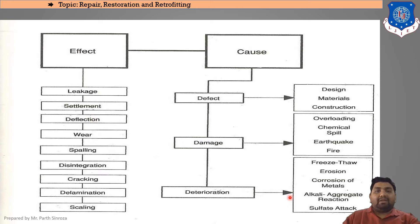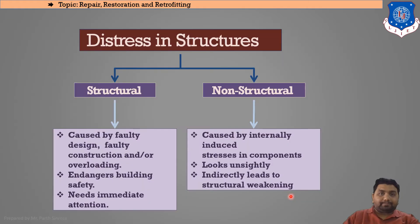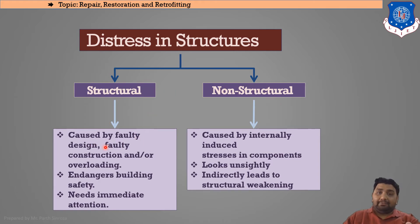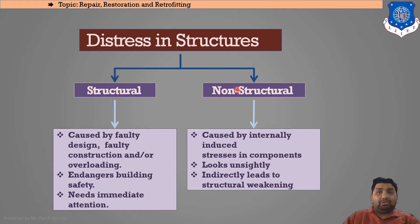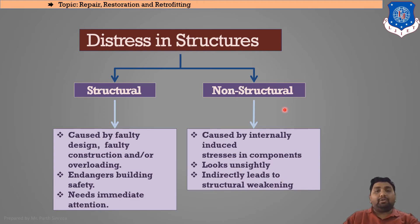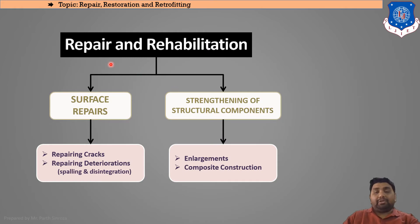Distressing structures are divided into two parts: structural and non-structural. Structural distress is caused by faulty design, faulty construction, or overloading, and it endangers building safety requiring immediate attention. Non-structural damage causes internal induced stresses, looks unsightly aesthetically, and indirectly leads to structural deterioration. If structural members are damaged, the first priority is to retrofit or restore them.